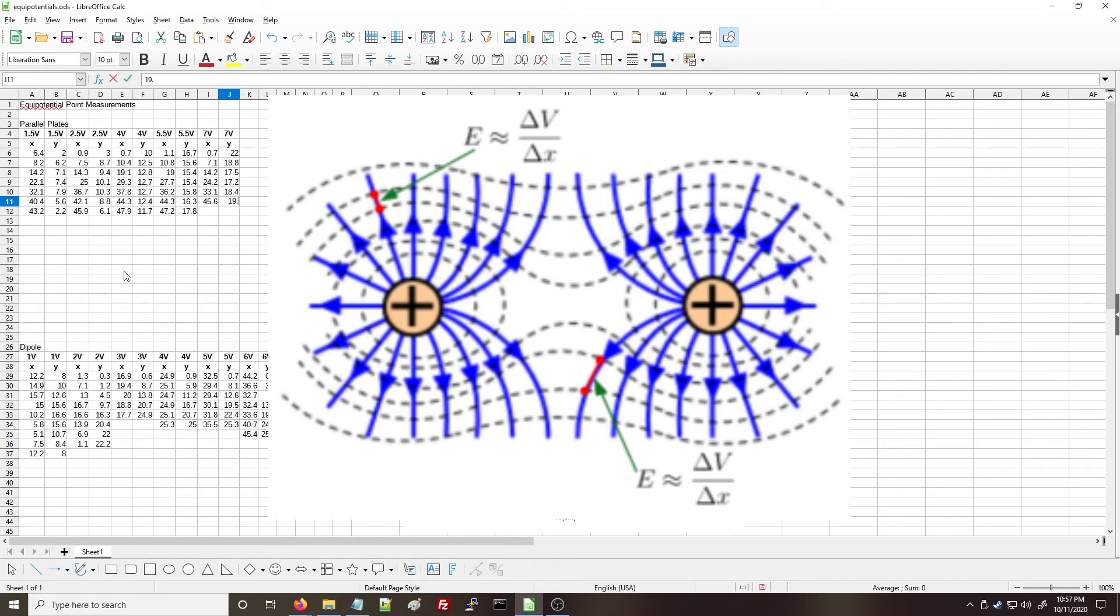You can also measure the strength of the electric field directly from your equipotential lines by remembering that the electric field is equal to the gradient of the potential.